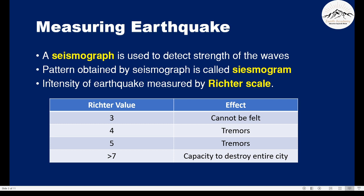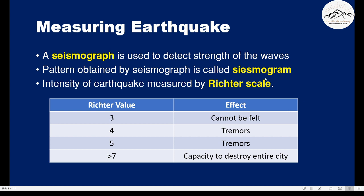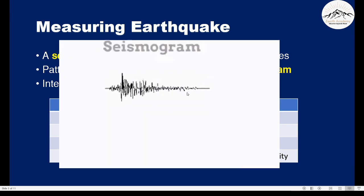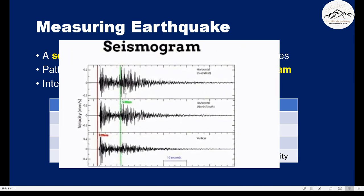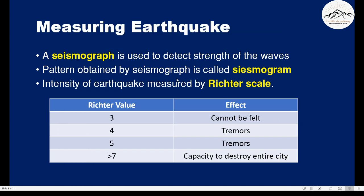What is a seismogram? The pattern obtained by the seismograph is known as a seismogram. Here, this is what a seismogram looks like — the needle is drawing these patterns. It helps us to determine the Richter value of the earthquake.